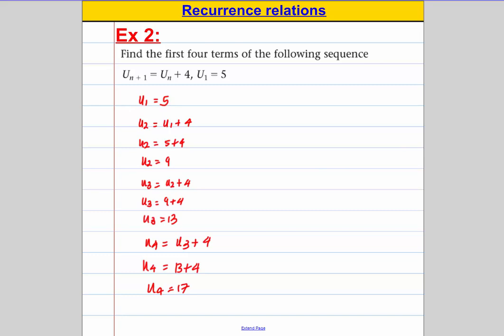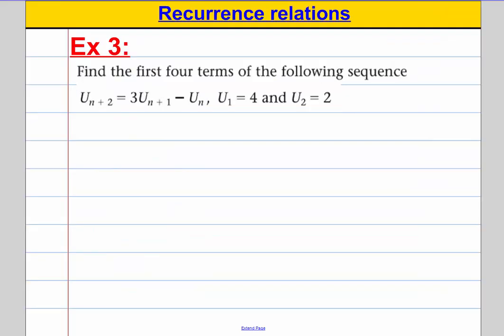And we are done. And here are the terms of the sequence, the first four terms. There's u1, that's the answer for u2, that's the answer for u3, that's the answer for u4.